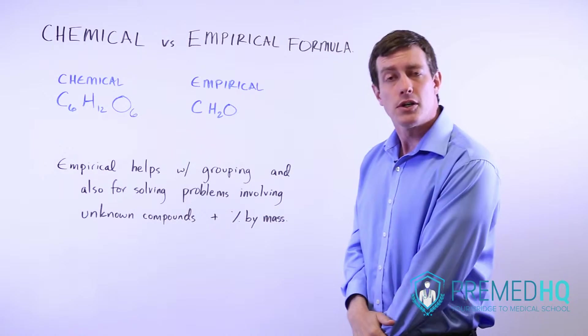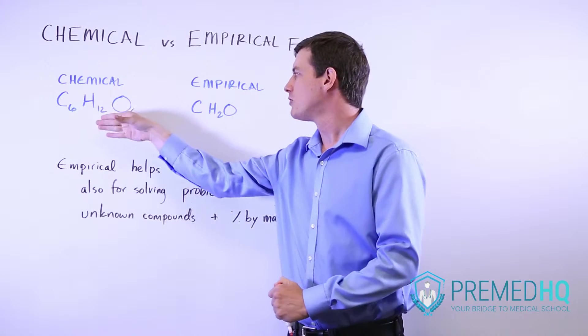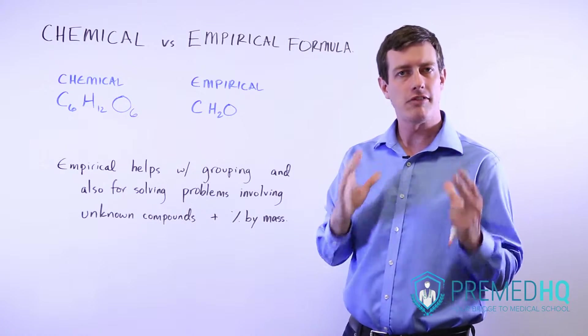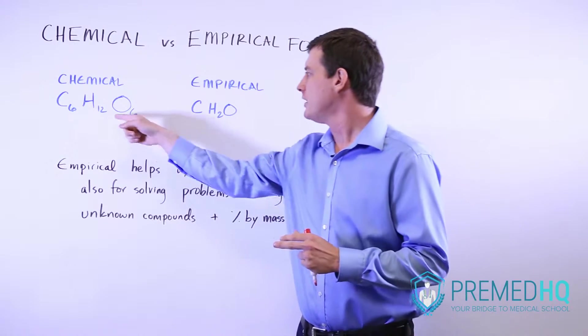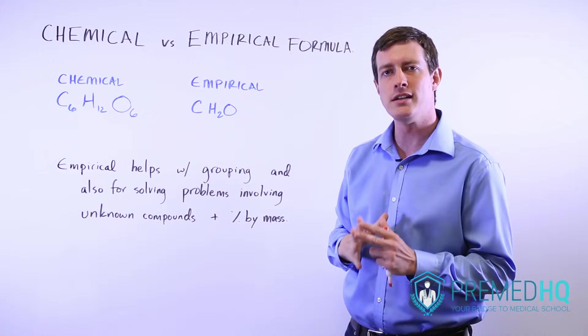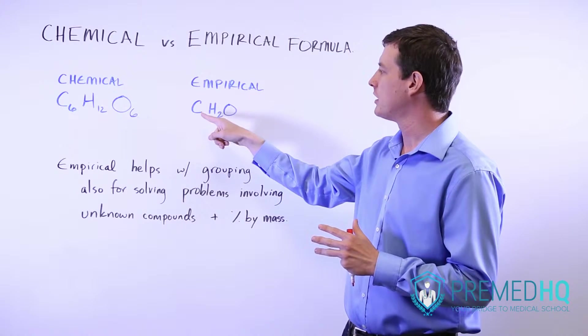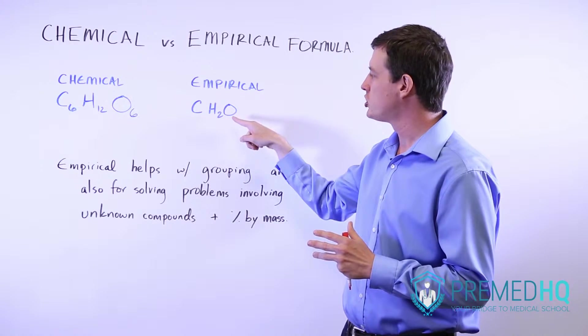To get to the empirical formula, you essentially divide the chemical formula by its greatest common factor. For all of these, they can be divided by six, and what you end up with is an empirical formula of CH2O.